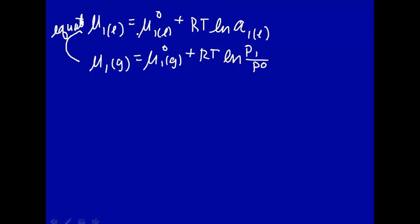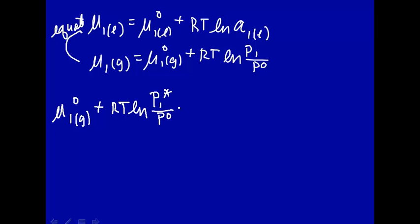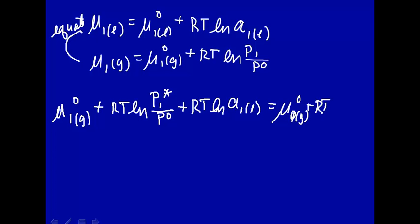Substituting in, the chemical potential of the liquid in the standard state is the chemical potential of component one in the standard state plus RT times the natural log of the vapor pressure of pure substance one divided by the standard state, plus RT times the natural log of the activity of one in the liquid state. That equals the standard state chemical potential of one in the gas phase, plus RT times the natural log of the pressure in the mixture - not the pure substance, but the mixture - divided by the standard state. How convenient - these cancel out.